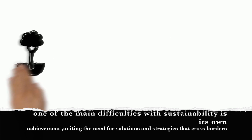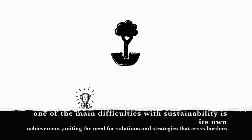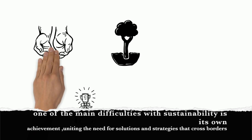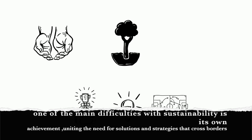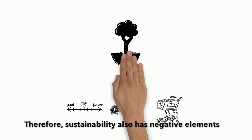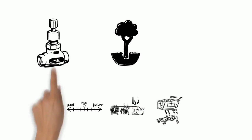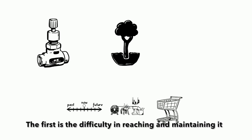One of the main difficulties with sustainability is its own achievement, uniting the need for solutions and strategies that cross borders. Today, the fundamentals for production and consumption are opposed to those of systemic sustainability. Therefore, sustainability also has negative elements — the first being the difficulty in reaching and maintaining it.